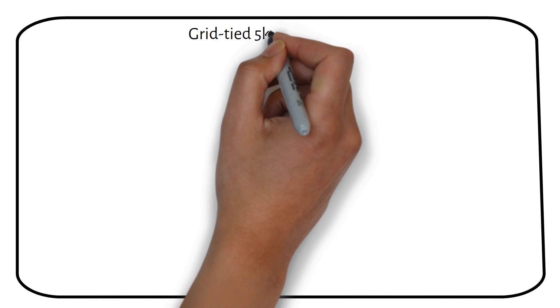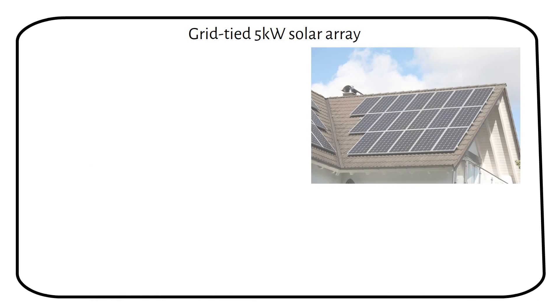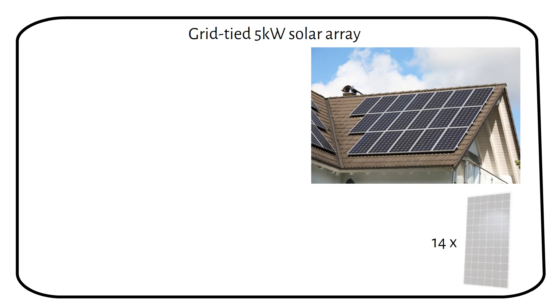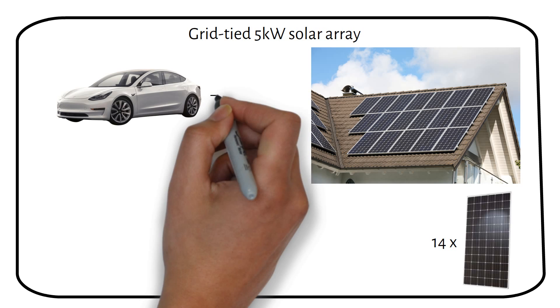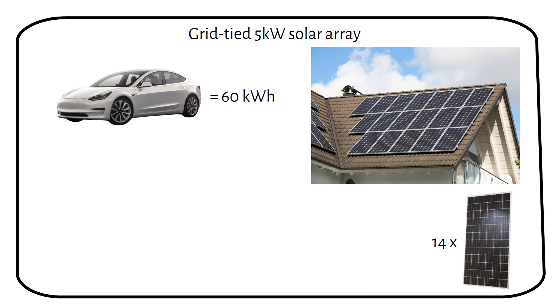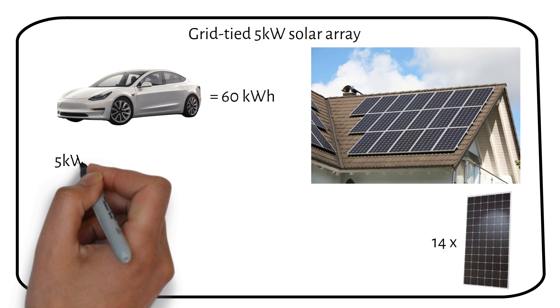The next setup describes a grid-tied solar system with solar panels on the roof of the home. The average solar installation for American homes is 5 kilowatts, equating to roughly 14 panels at 365 watts each. The standard Tesla model has a 60 kilowatt hour battery. On an average sunny day with 3.5 sun hours,